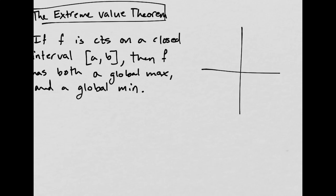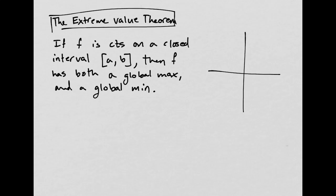So continuous means no breaks, no infinite discontinuities, no jumps, no holes. So I'll say from A to B. So some closed interval, then F has both a global maximum and a global minimum.